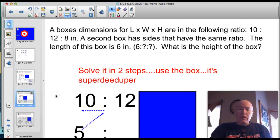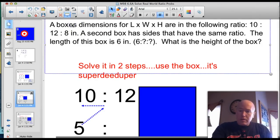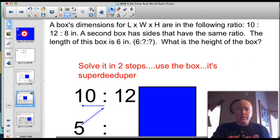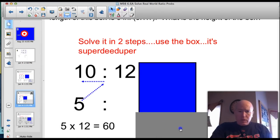Let's try another one. See if you can solve this one on your own. A box's dimensions for length, width, and height are in the following ratio: 10 to 12 to 8 inches. A second box has sides that have the same ratio. The length of this box is 6 inches. So we're going to have that 6 to something to something. What is the height of the box? Go ahead and give that a shot so you can figure it out. Solve it the same way we just did.